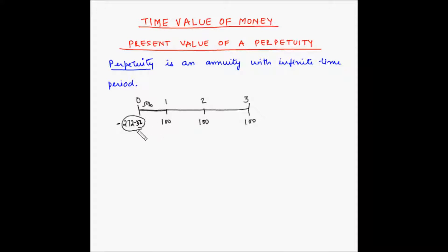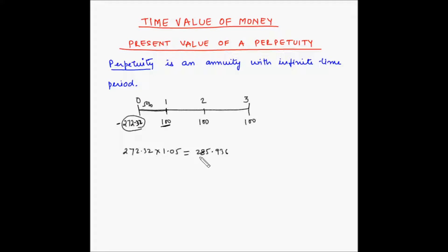So 272.32 multiplied by 1.05 equals 285.936. This amount converts to 285.936 rupees at the end of the first year. From this amount, 100 rupees are paid out. So the remaining balance is 185.936 — the bank now holds 185.936 rupees at the end of the first year.